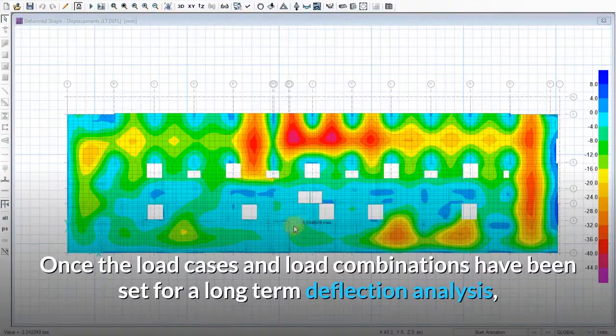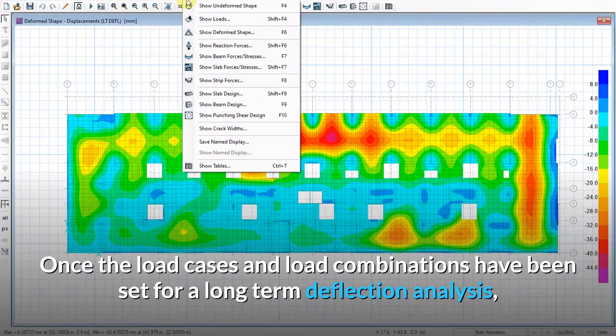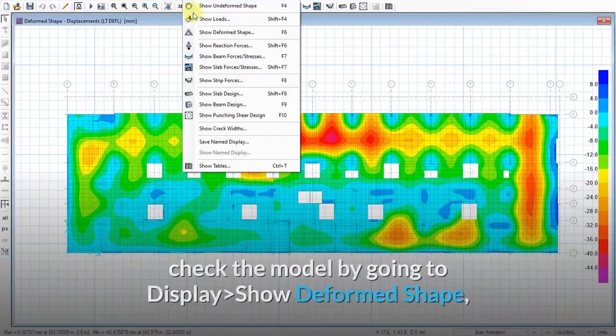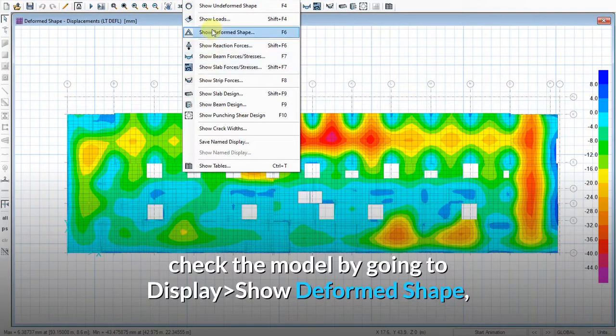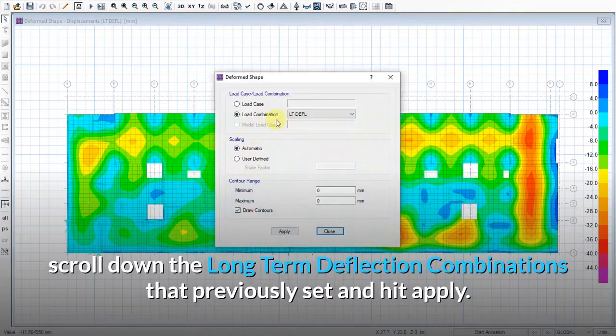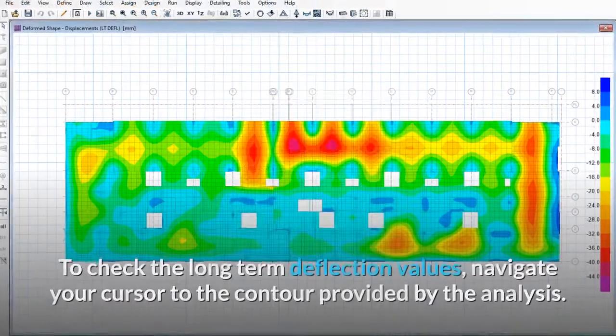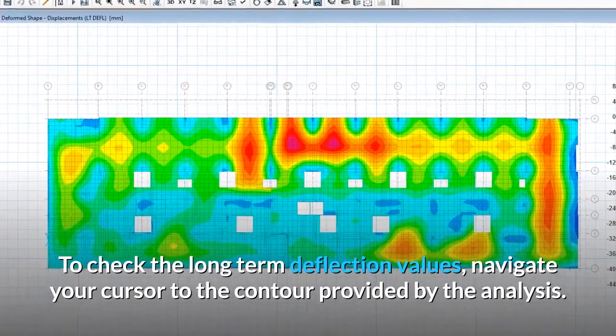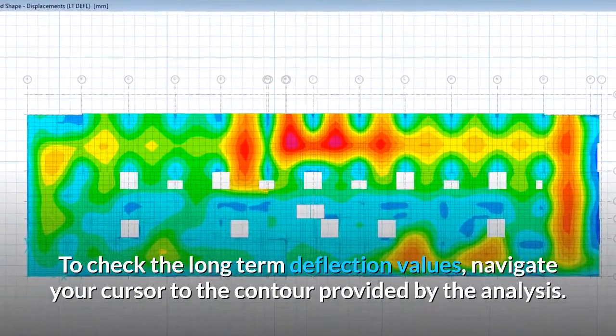Once the load cases and load combinations have been set for a long-term deflection analysis, check the model by going to display, show deformed shape, scroll down the long-term deflection combinations that previously set and hit apply. To check the long-term deflection values, navigate your cursor to the contour provided by the analysis.